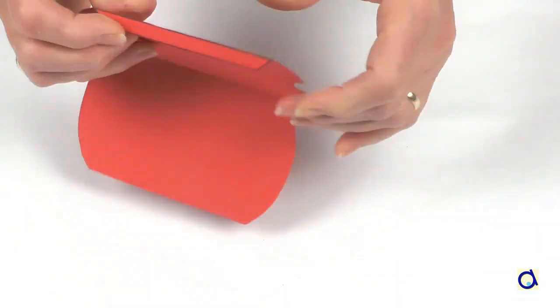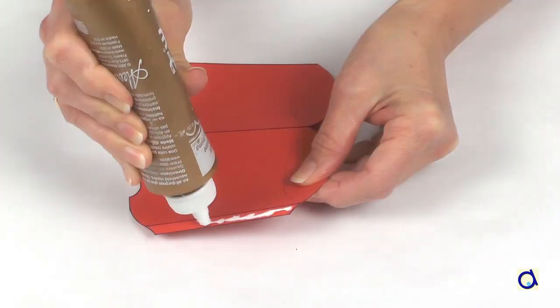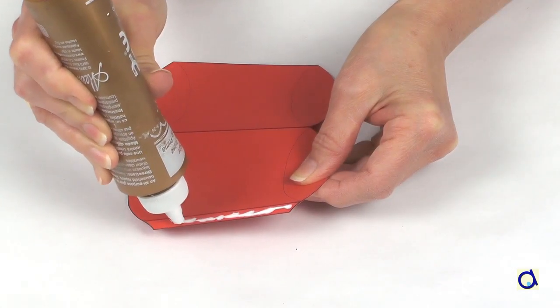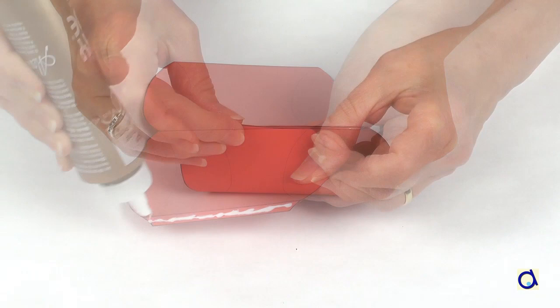Fold the box along the long folds. Put some white glue on the tab of the box and glue it to form the tube of the box.